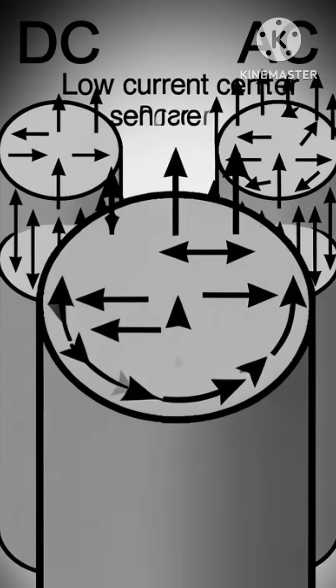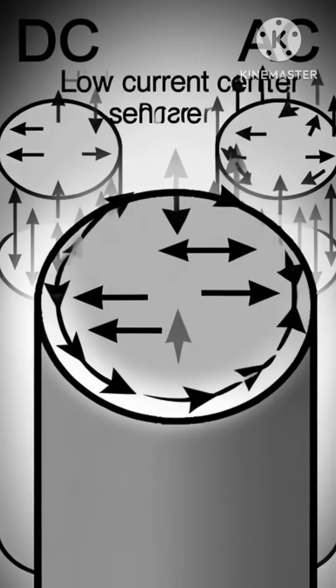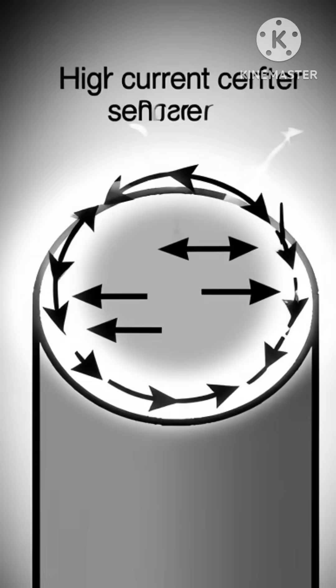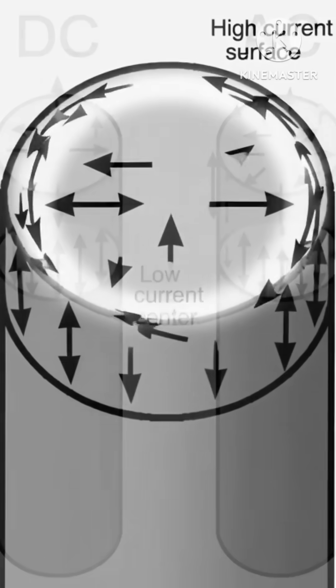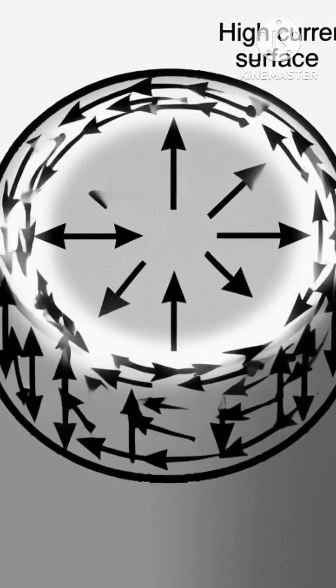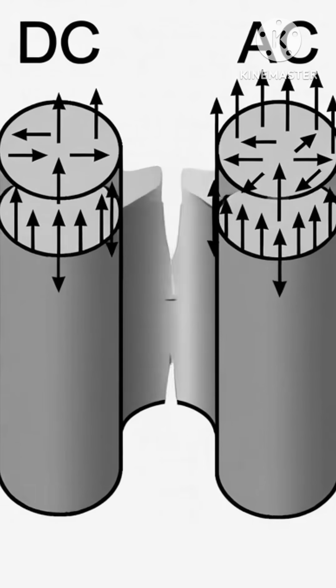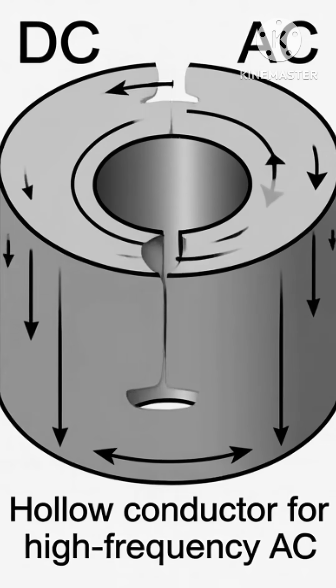As a result, the inner part of the wire carries less current, reducing the effective cross-sectional area and increasing resistance, which leads to more energy loss.